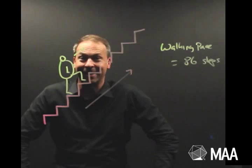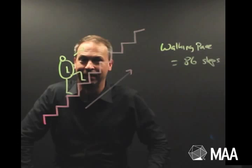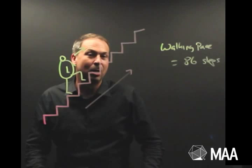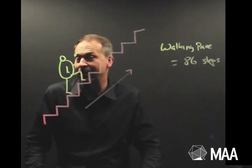At my usual walking pace, I count every day 86 steps going up the escalators, walking up them as they move. So here's the puzzle I had in my mind: If I were to walk up at a slower pace, would I count more than 86 steps or less than 86 steps, or the same number?